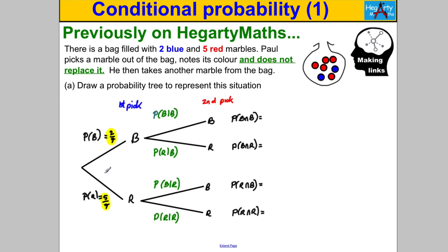Let's assume he picks a blue first. Now the probability he picks another blue given he already picked a blue — there is only one blue left out of a total of six marbles, so it's one sixth. The probability he picks a red given he took a blue on the first pick — the number of reds didn't change, so there are still five reds out of six total. These two probabilities add up to one.